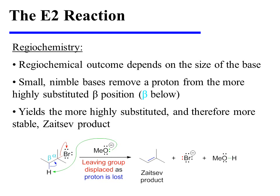The regiochemical outcome of the reaction depends on the size of the base. Small, nimble bases can reach any beta proton they want. As a result, they are able to remove a proton from the more highly substituted beta position to yield the more highly substituted, and therefore more stable, Zaitsev product.